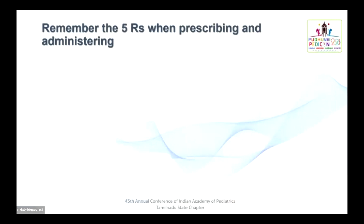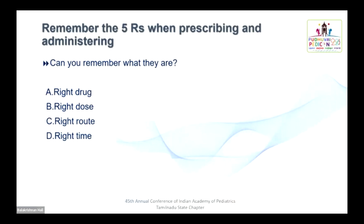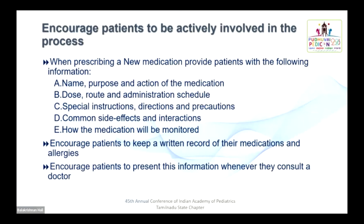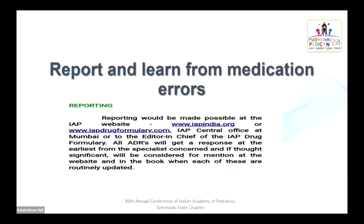Remember the five R's: right drug, right dose, right route, right time, and right patient. Develop checking habits twice or thrice when prescribing a medication. Remember, computerized systems still require checking even though they have a facility for blocking errors. Never administer medication unless you are 100% sure about the drug. Practice makes permanent and practice makes perfect. Involve patients and parents in reporting adverse drug effects actively while monitoring for newer drugs, and report medication errors to the concerned authorities through IAP websites: iapdrugformulary.com and iapindia.org.